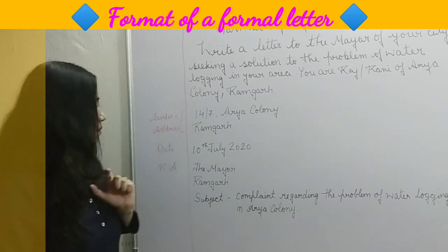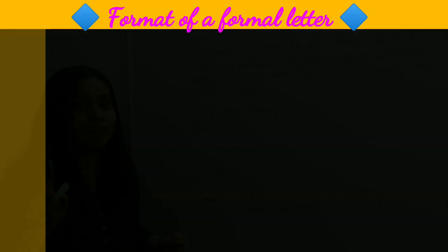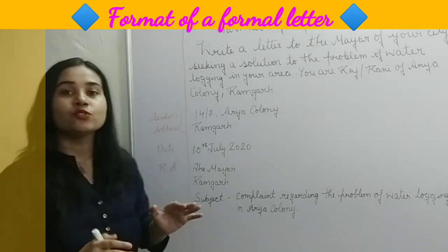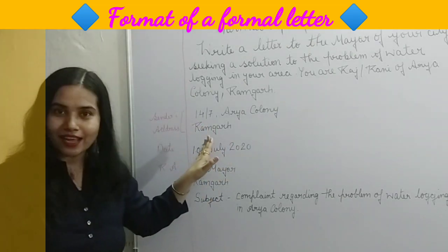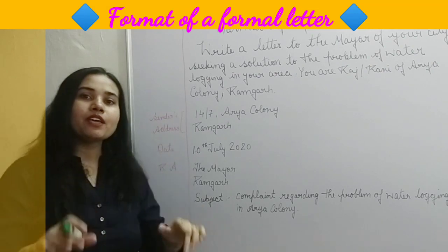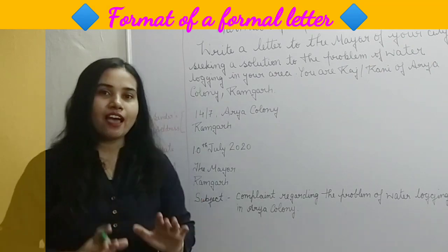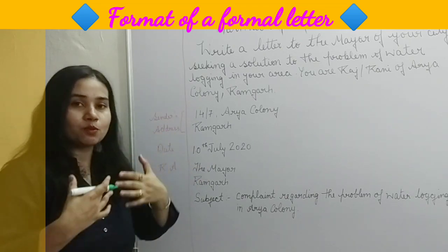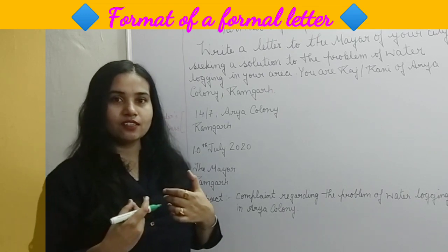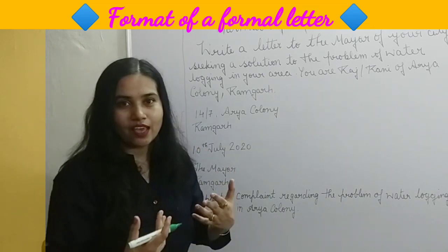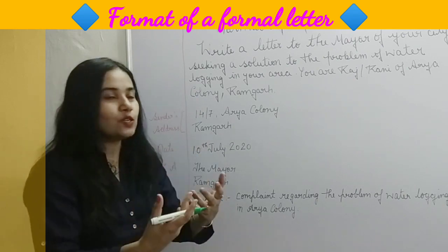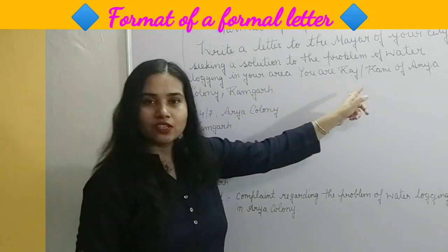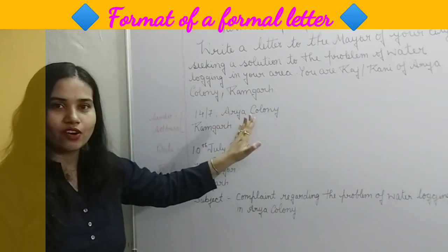I am writing 'Sender's address' only to help you understand — you don't have to write that label, just directly write the address. So the sender's address here would be: 14/7, R.A. Colony, Ramghar — because that situation is given to you.